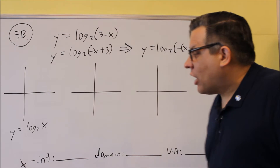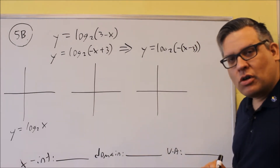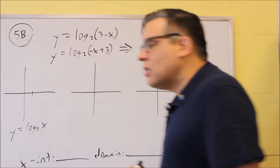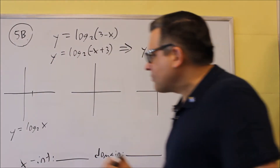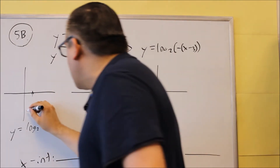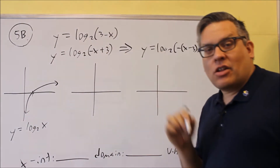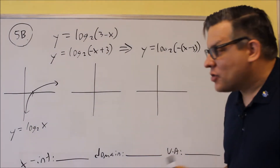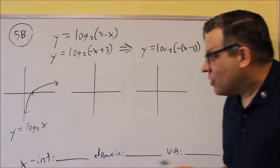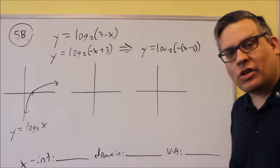So let's start with the base graph. The base graph of log base 2 of x is going to look real similar to the ln graph. It's going to have a vertical asymptote at x equals 0, and it's going to cross the x-axis right there at 1, with the same similar shape. You don't have to be exact in this because that's going to require you to plot points — I'm mainly looking for sketches here. That's what the base graph will look like, real similar to the ln x graph.